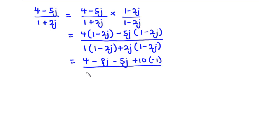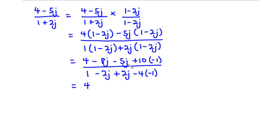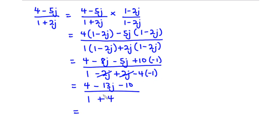For the denominator: 1 times 1 is 1, 1 times -2j is -2j, 2j times 1 is +2j, and 2 times -2 is -4, with j² = -1. Simplifying the numerator: 4, then -8j - 5j = -13j, and 10 times -1 = -10. For the denominator: 1, the -2j and +2j cancel, and -4 times -1 = 4, so 1 + 4 = 5. In the numerator, 4 - 10 = -6.